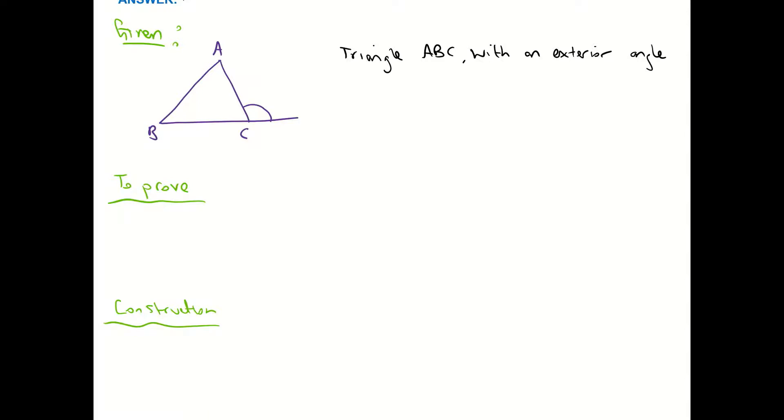And my constructions are going to be that I'm going to label angles one, angle two, angle three, and angle four. So it'll make it a little bit easier for my proof part. So all I mean by that is I'm just going to label them maybe one for A, two for B, three for C, and my exterior angle four.